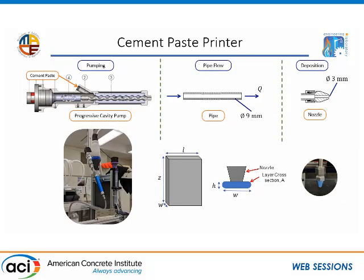Moving on to the printer side — this is a brief snapshot of our paste cement printer. It is a modified version of an open-sourced polymer fused filament fabrication printer, your typical printer that prints plastic parts. The main modification is you take the hot-end extruder off and add a progressive cavity pump. The cement paste travels through this cavity in nodes, then goes through the pipe and is extruded out through our nozzle.